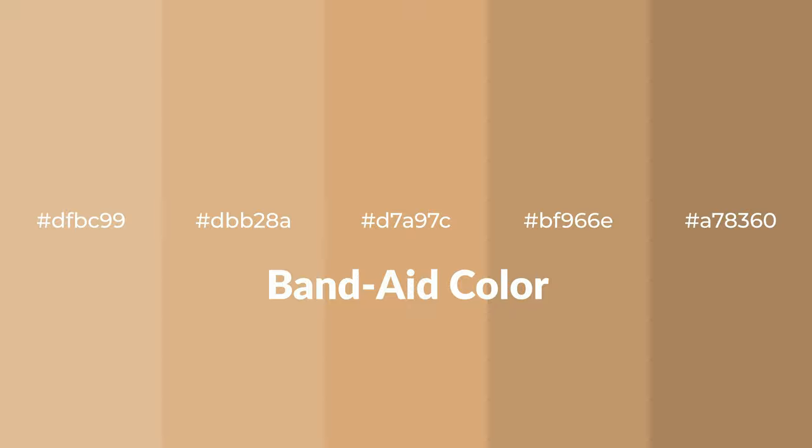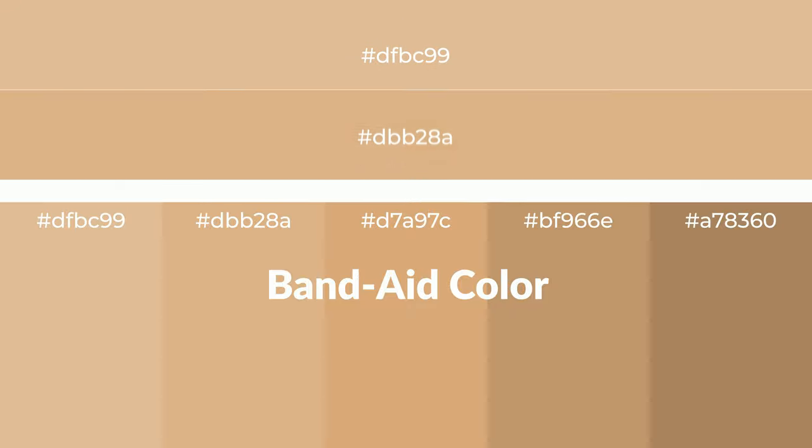Warm shades of band-aid color with brown hue for your next project. To generate tints of a color, we add white to the color. Tints create light and exquisite emotions. To generate shades of a color, we add black to the color, and it is used in patterns, 3D effects, and layers. Shades create depth and drama.